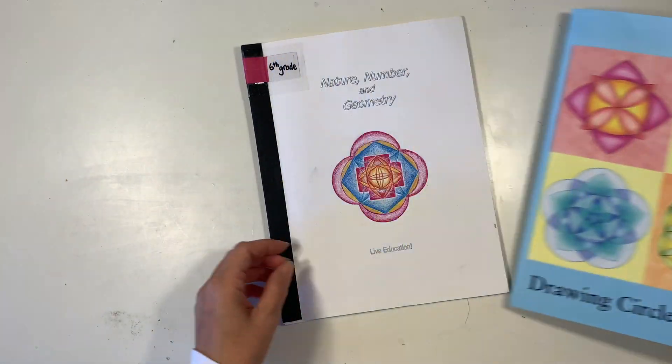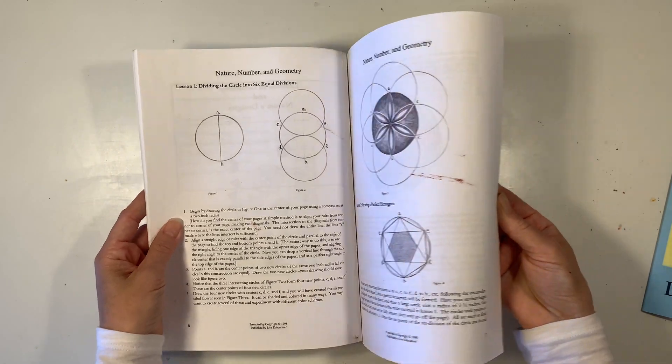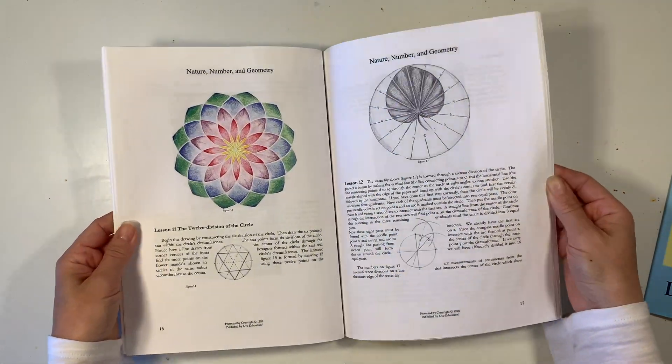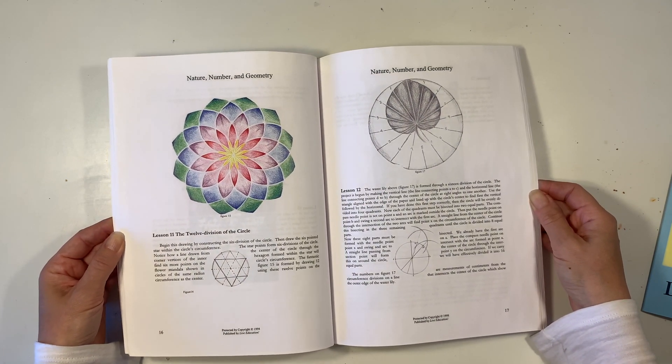I also have my Waldorf curriculum, this is by Live Education for grade 6. I'm also using this for our main lesson block, and our 12 division of a circle is going to look a little bit more like the image in this book.